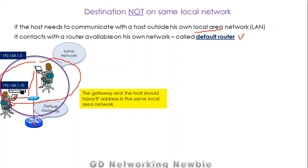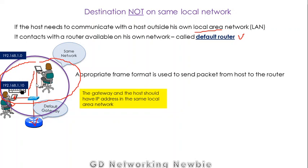For this to happen, the IP address on the router interface and the IP addresses of the other nodes on that local area network must be part of the same subnet. And for data to be sent from this computer to this router, the appropriate frame format has to be used — the frame format supported by that medium. If this is Ethernet, then we have to use the Ethernet frame structure to send the data from the user to the default router.